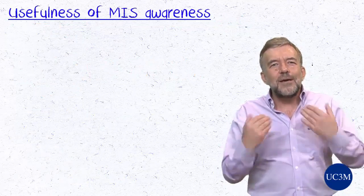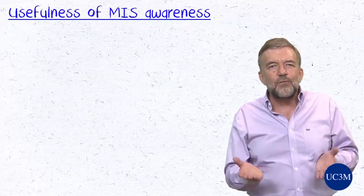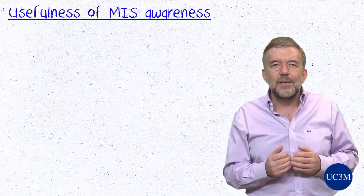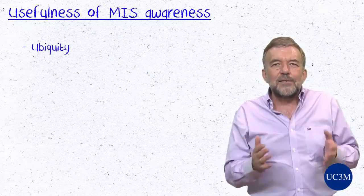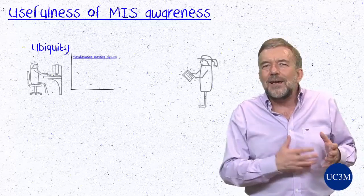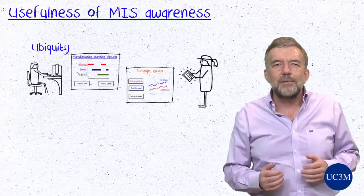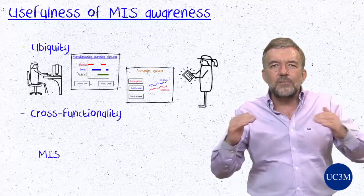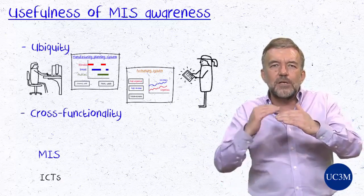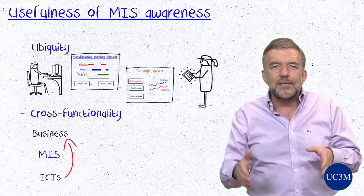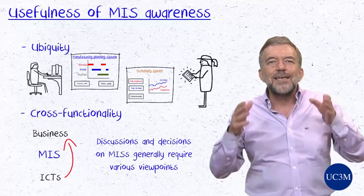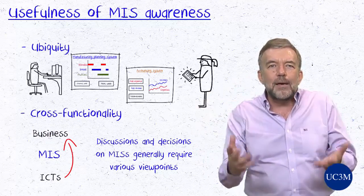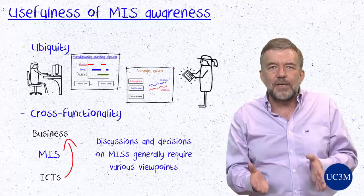Several factors can help to explain the perceived usefulness of management information systems' awareness. First, Ubiquity: nowadays, information systems are used for nearly every task conducted in companies. Second, Cross-functionality: management information systems lie at the frontier between information and communication technologies and businesses. Thus, discussions and decisions on management information systems generally require inputs from various viewpoints, rather than merely the perspective of management information systems specialists.